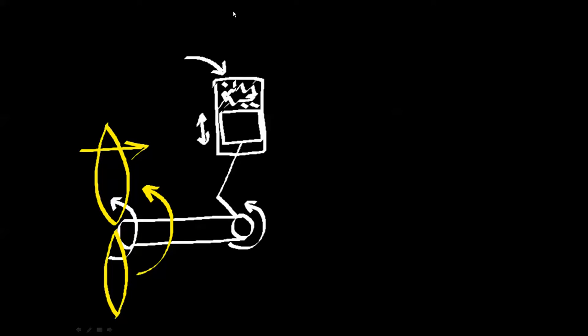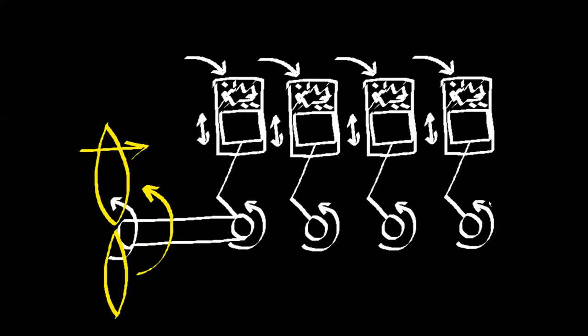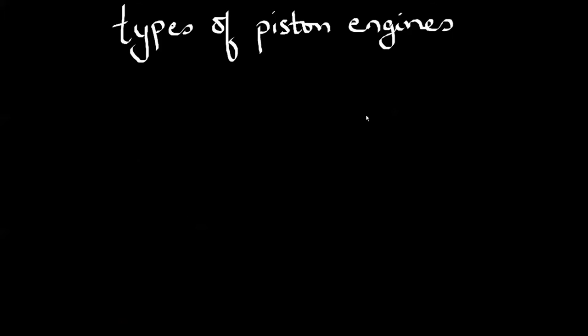As you can imagine, one cylinder attached to one propeller gives us some power, but we can multiply that power by adding more cylinders. And this is the idea behind, or this is the difference behind most piston engines, in that the types of piston engines depend on the line or the type of arrangement of the cylinders.